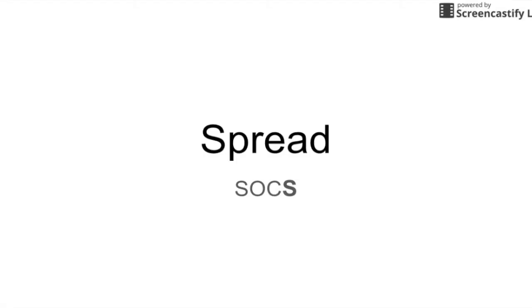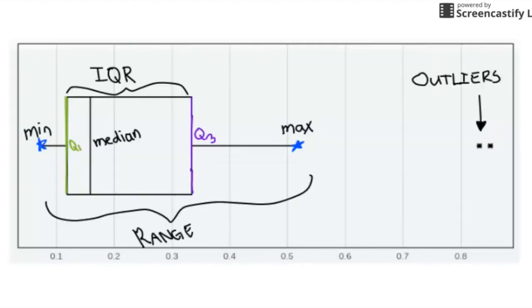Lastly, we will talk about the final S, spread, or the distribution of data. Spread is measured in quite a few ways such as range, standard deviation, and variance.